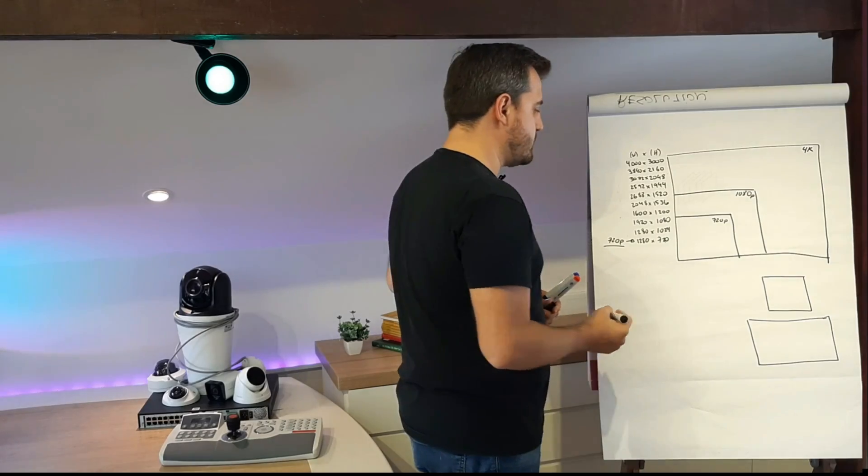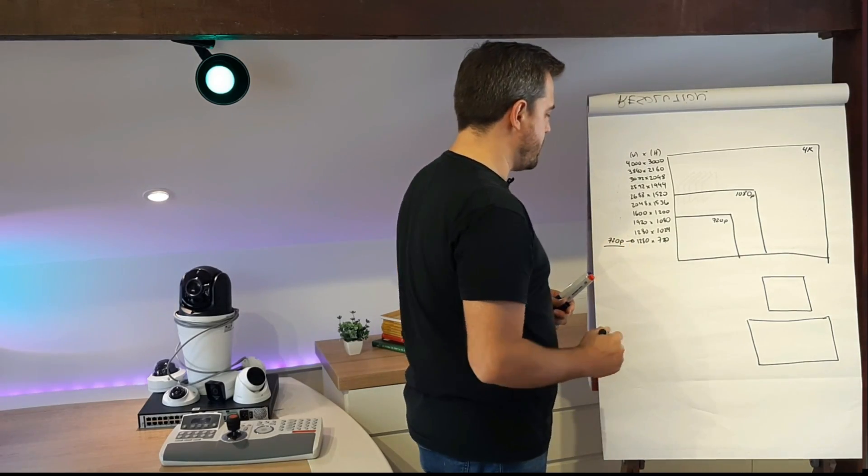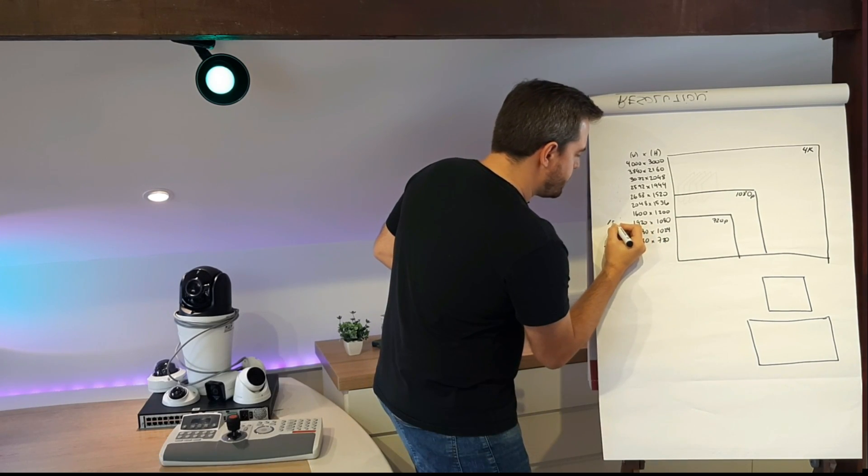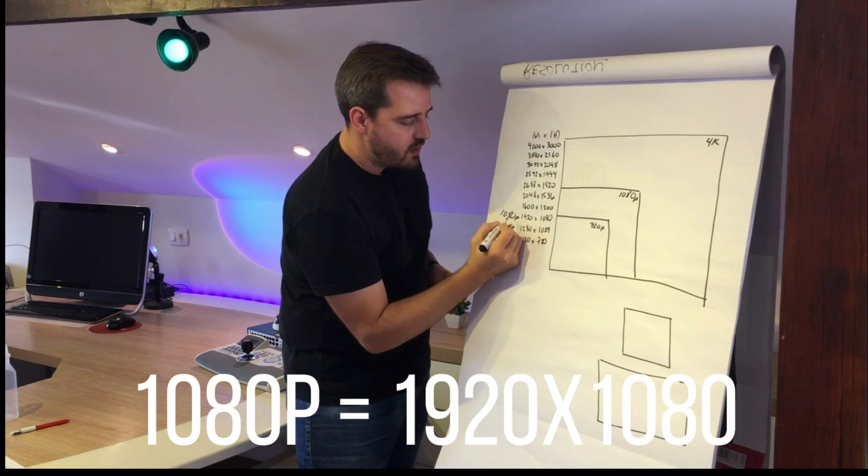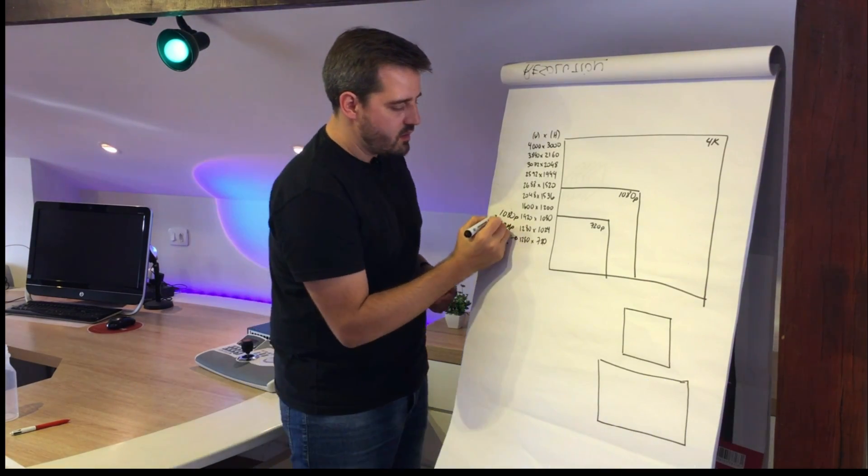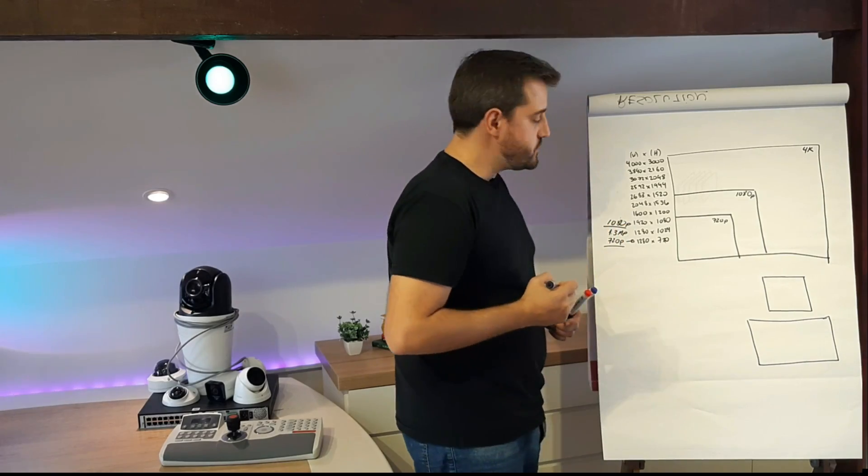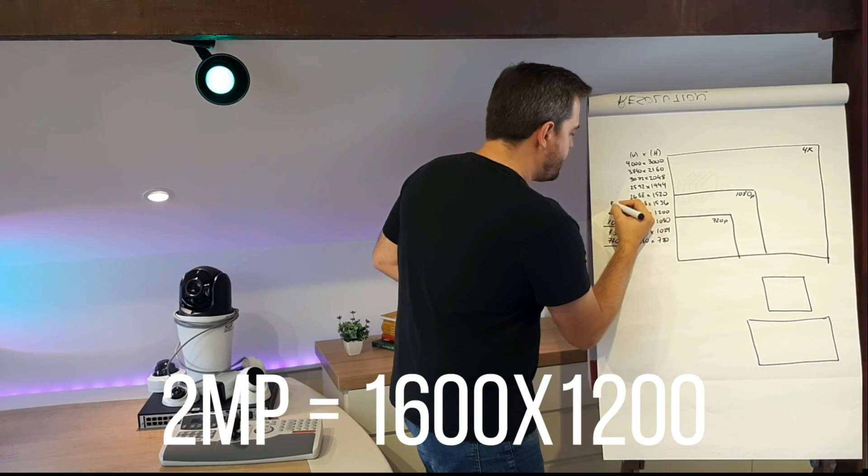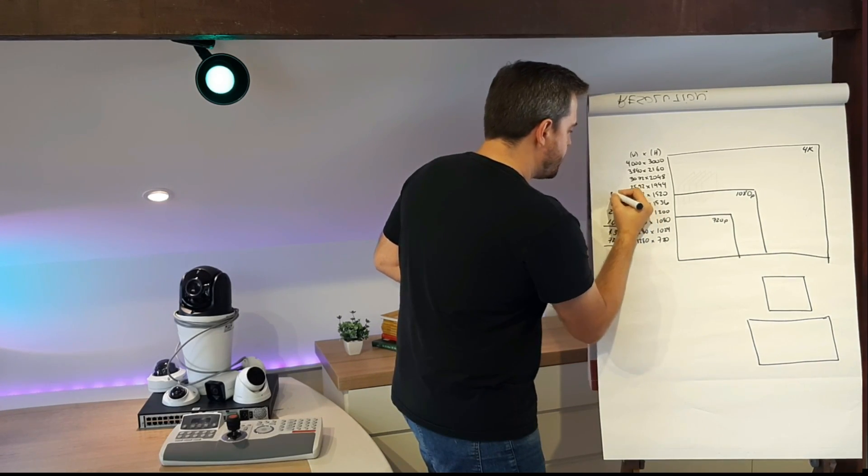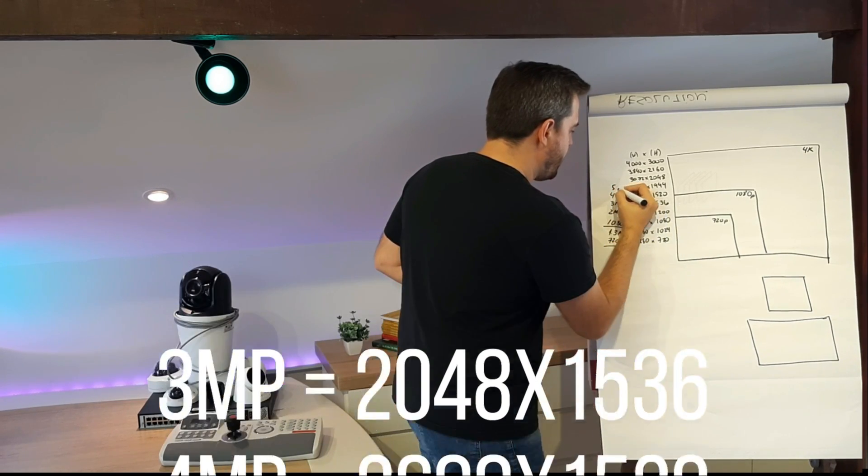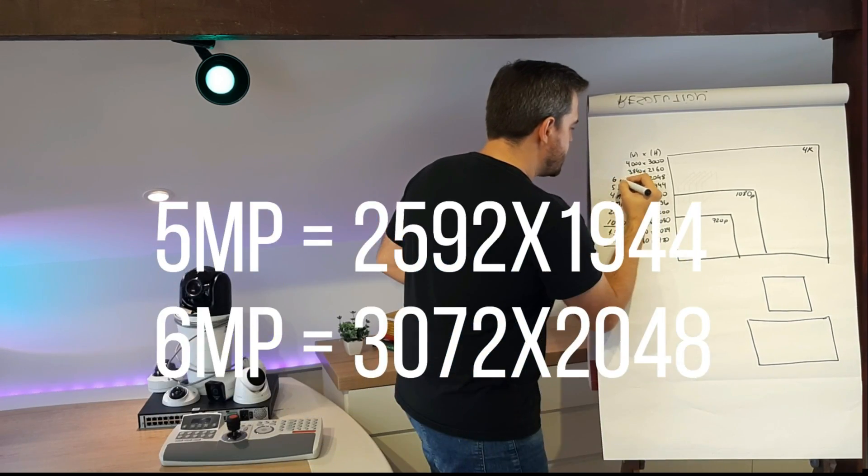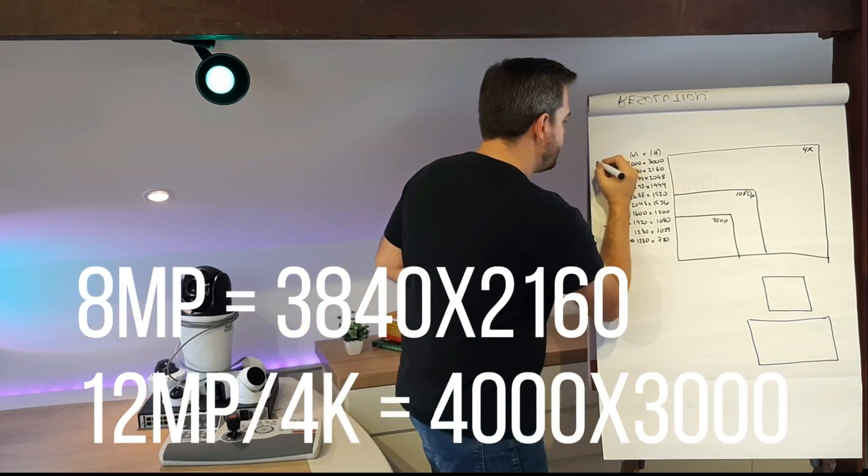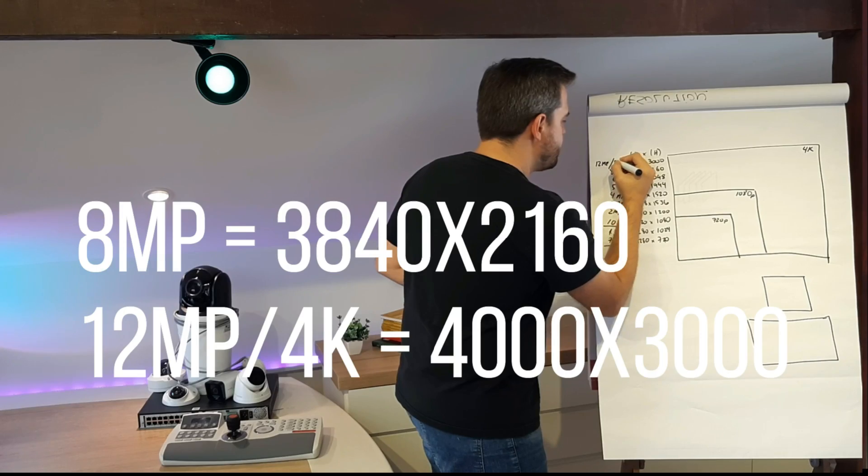So we have the 720p. It's still very used this one. We have 1.3 megapixel and the 1080p. 1080p it's widely used as well. We'll have the 2 megapixel camera and then we'll go up 3, 4, 5, 6, 8 and 12 megapixel 4K.